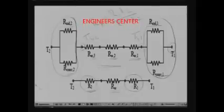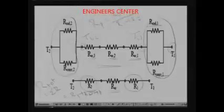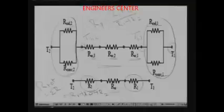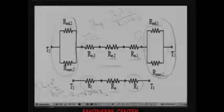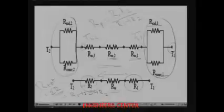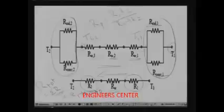This is the resistance network simplified for the given problem. The total resistance R_total is simply equal to R1 plus R_wall plus R2. We can find out the individual resistances because we have already given expressions for radiative resistance, convective resistance, and conductive resistance. If you have the property data, you can find the total resistance, and once you know the total resistance, you can find the total heat transfer rate, since heat transfer rate is T1 minus T2 divided by the total resistance. You can see the usefulness of the network analogy — complicated problems can be easily broken down into simple ones.